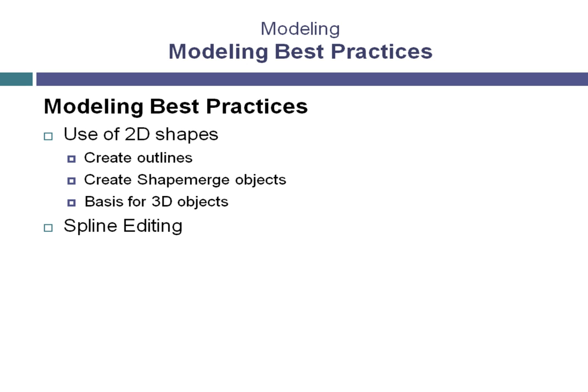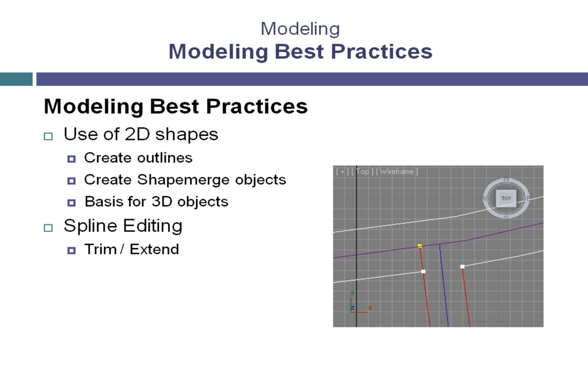Editing splines, or shapes, can be done in a lot of different ways. Some methods provide a simple yet effective way of working and would be considered best practices, while other ways are more time-consuming and complicated and create a more inefficient workflow. An example of a best practice in spline editing would be using the Trim and Extend commands. These commands simplify the process of editing open-ended splines by allowing you to use a second spline to cut back or add to the spline you're editing, saving a number of steps and creating an efficient workflow.